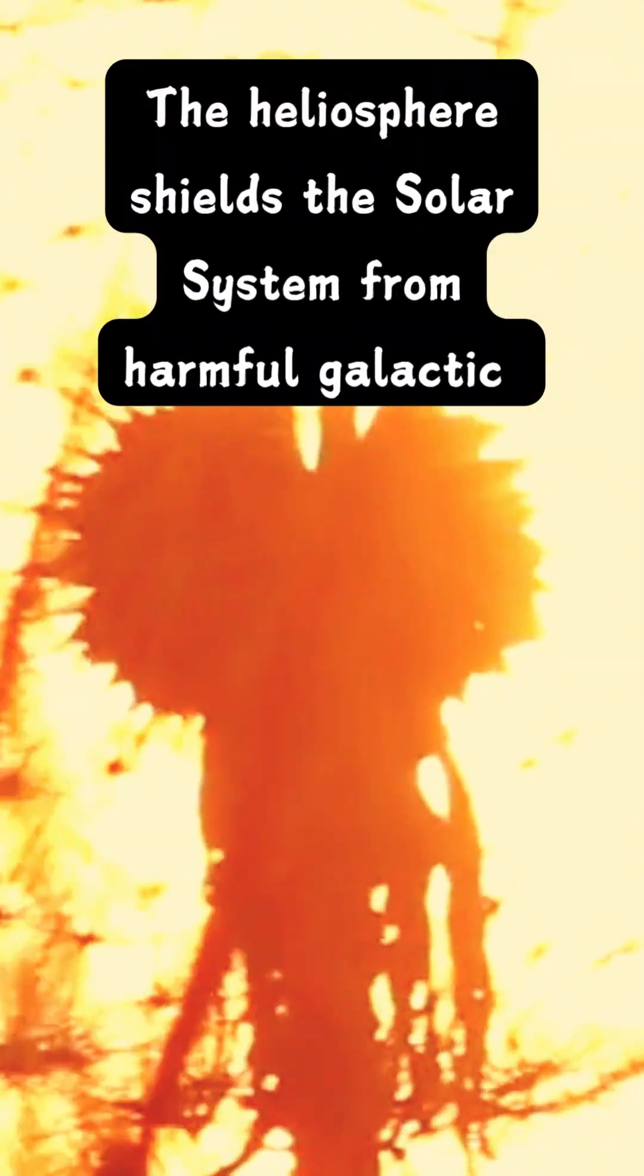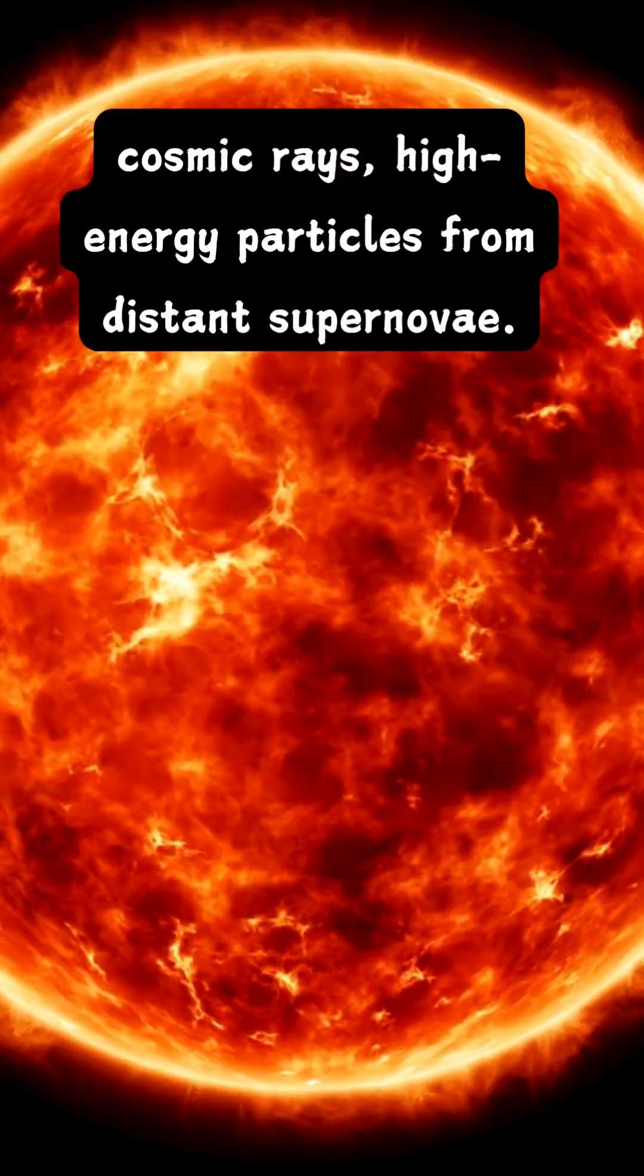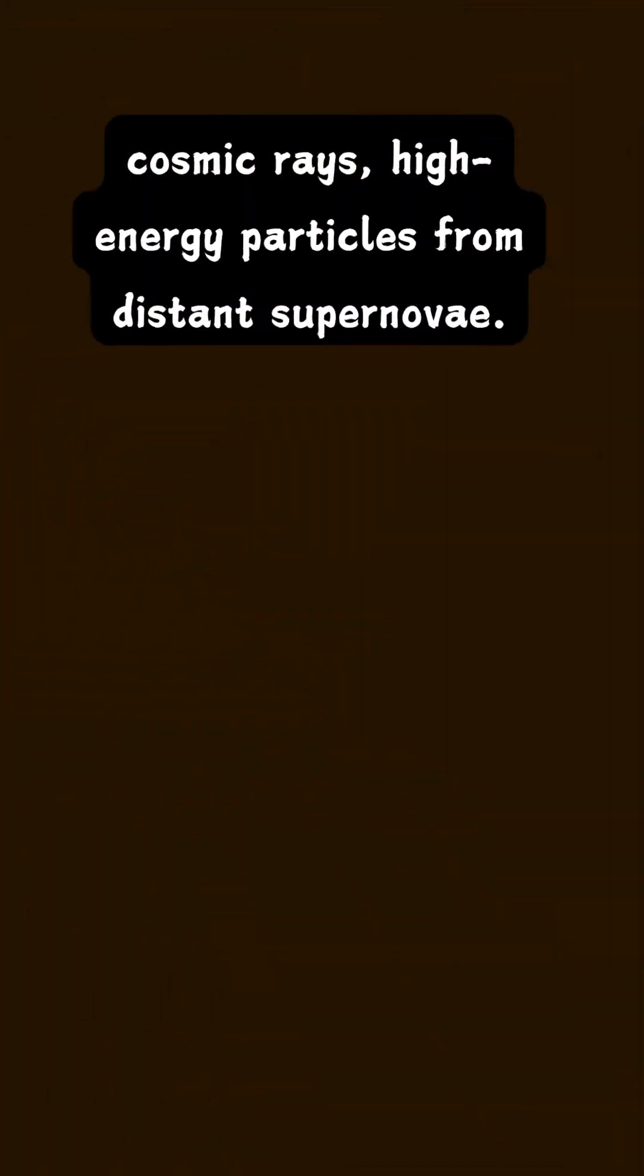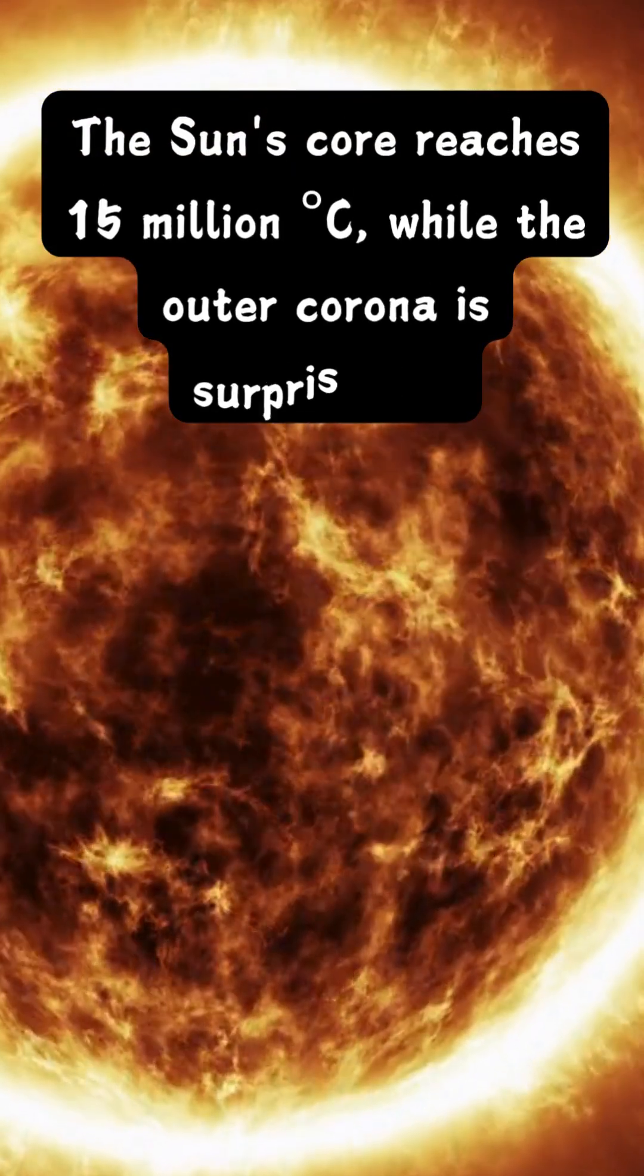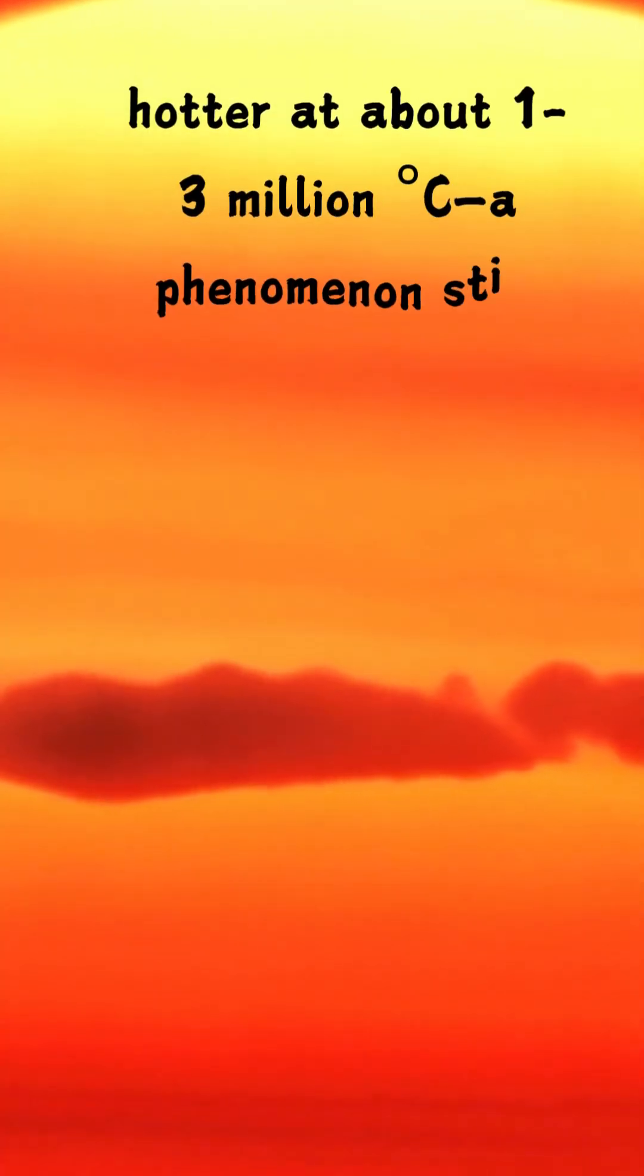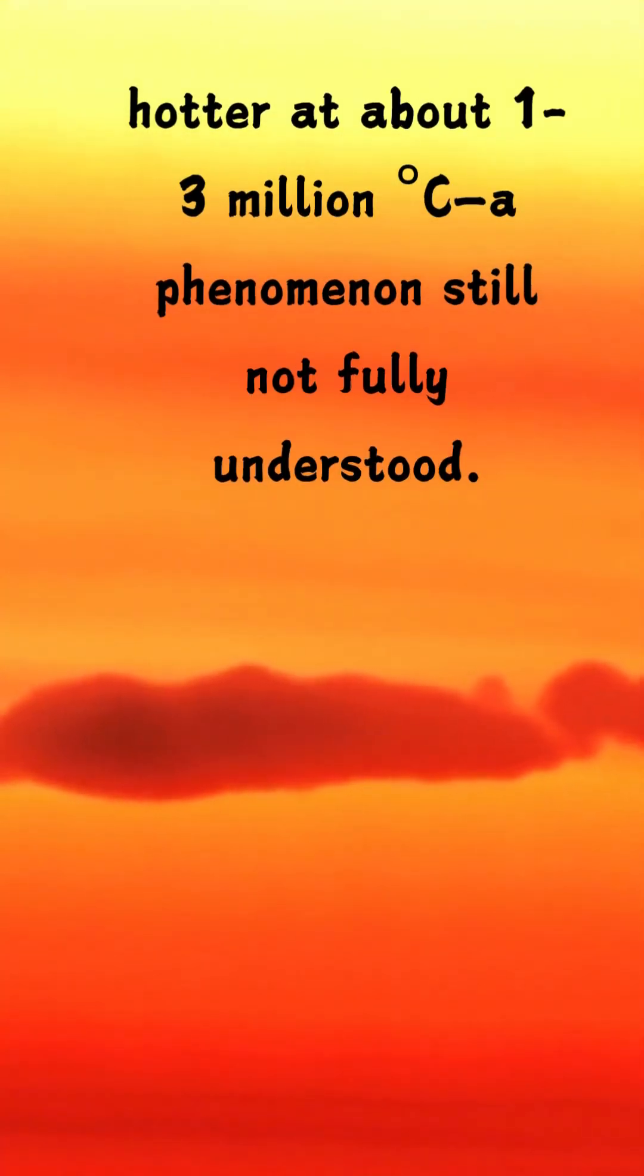The heliosphere shields the solar system from harmful galactic cosmic rays, high-energy particles from distant supernovae. The Sun's core reaches 15 million degrees Celsius, while the outer corona is surprisingly hotter at about 1 to 3 million degrees Celsius, a phenomenon still not fully understood.